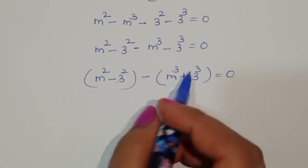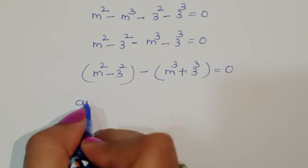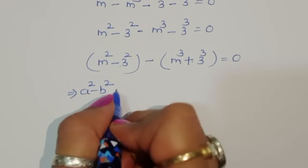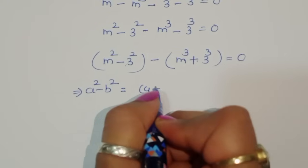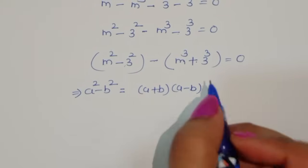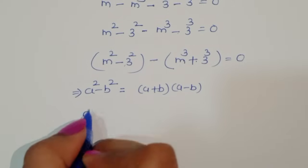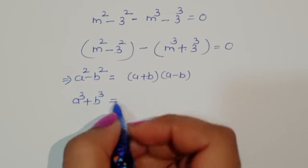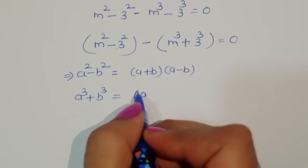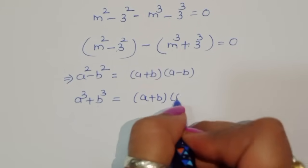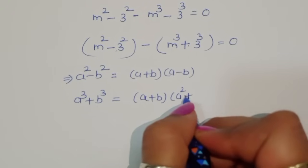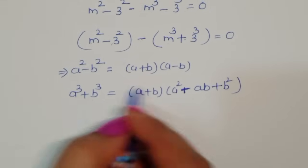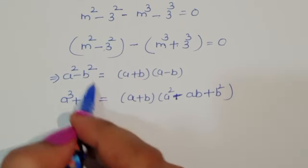Here we have two formulas to use. First: a squared minus b squared equals (a plus b)(a minus b). Second: a cubed plus b cubed equals (a plus b)(a squared minus ab plus b squared). These are the two formulas we will now apply.